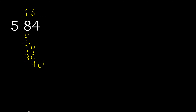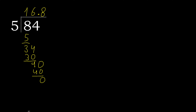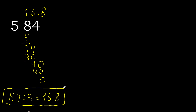There is no next digit, therefore we complete with a decimal point and add 0. Now we have 40. 5 multiplied by 8 is 40. 40 minus 40 is 0 — therefore finish. So 84 divided by 5 is complete.